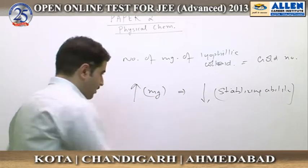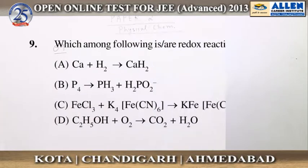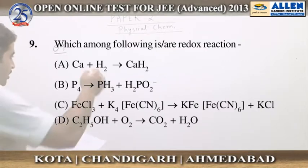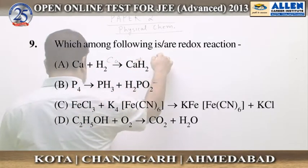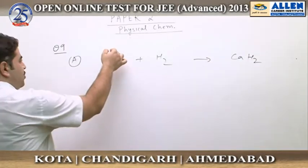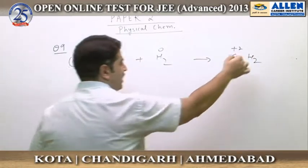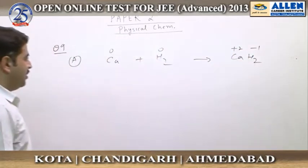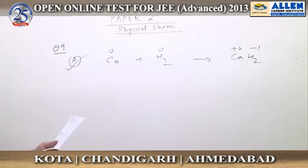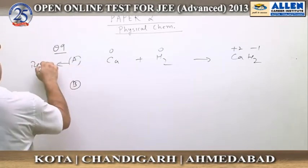Option C is correct: lower the milligrams required, higher will be the ability to stabilize the lyophilic colloid. In question number nine, we have to check which reaction is a redox reaction. In reaction A, calcium plus hydrogen is forming calcium hydride. Calcium has oxidation number zero, hydrogen has zero; in calcium hydride, calcium is +2 and hydrogen is −1. Calcium is getting oxidized and hydrogen is getting reduced, so reaction A is a redox reaction.